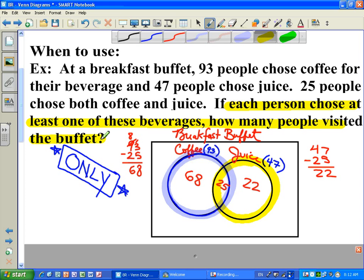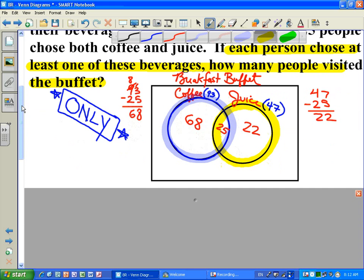Last thing we have to do now is answer the question, how many people have visited the buffet? And basically it comes down to simple addition, adding all the quantities in the entire Venn diagram to get the final answer.